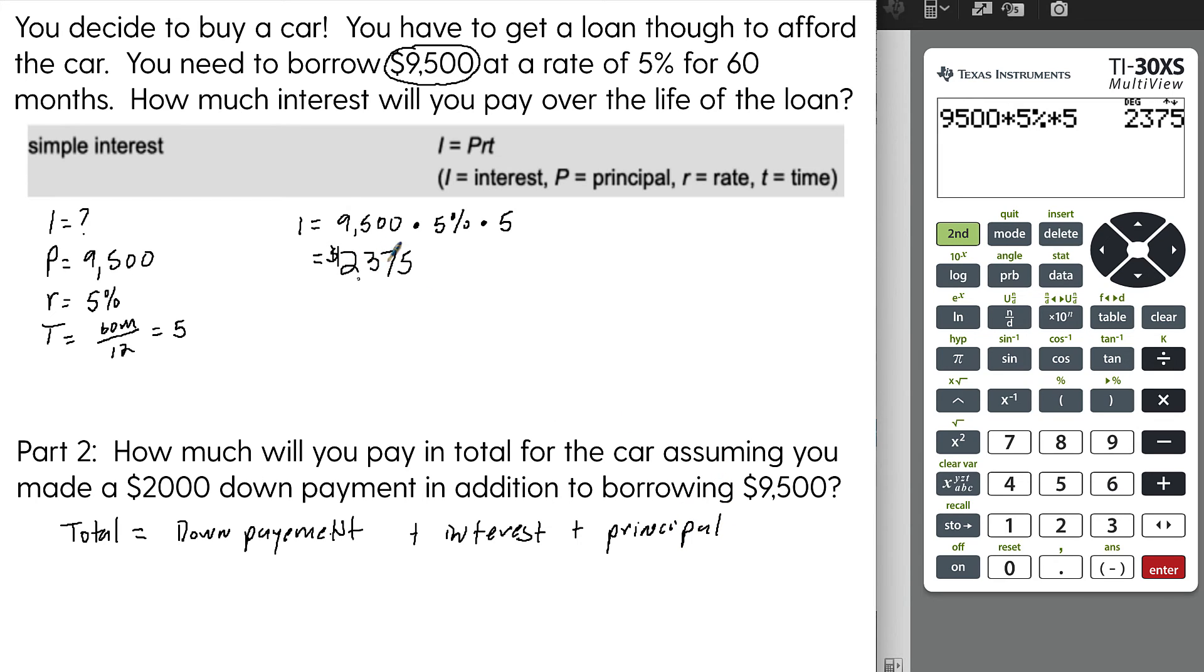The interest is the amount of money that you have to pay to borrow the money. The principal is what you're borrowing, that's $9,500. The interest is $2,375. And then often you do have to put a down payment. Down payments are the initial money that you pay. So we will add all these up. $2,000 plus $2,375 for the interest plus $9,500 for the principal. So this car cost $13,875.